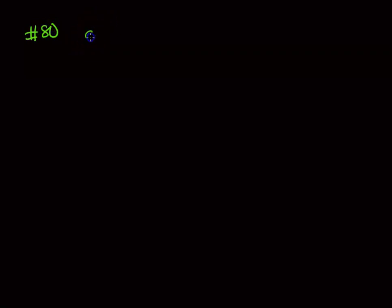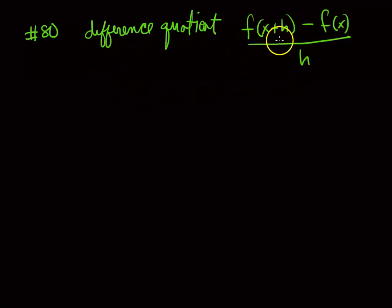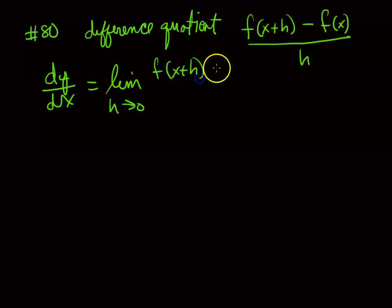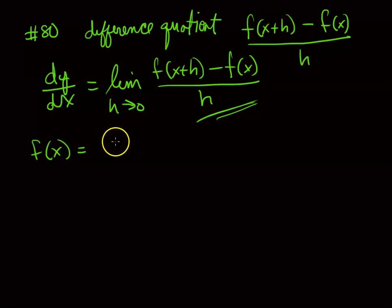The difference quotient is [f(x + h) − f(x)] / h. This is used in differential calculus — it's how the derivative is defined: the derivative of y with respect to x is the limit as h → 0 of [f(x + h) − f(x)] / h. Let f(x) = 1/(x + 3). The directions say: find the difference quotient for each function and simplify.